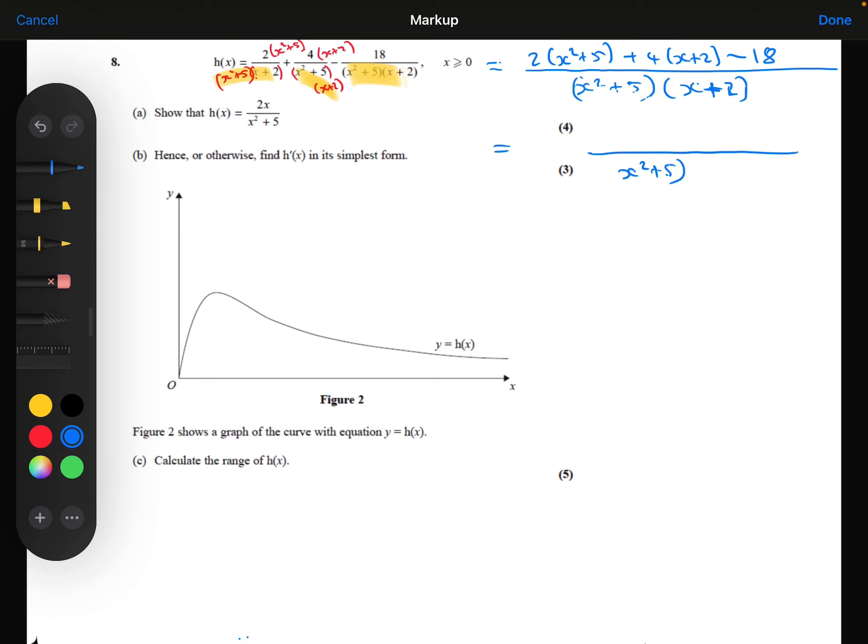Simplifying that numerator now. So just expanding those brackets, we've got 2x squared plus 10 plus 4x plus 8 minus 18. I notice that the 10 plus 8 minus 18 is all just 0.